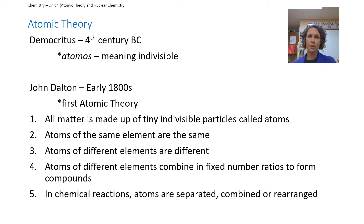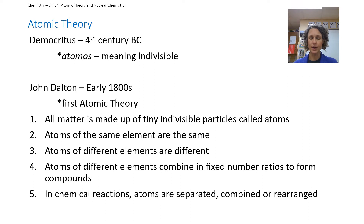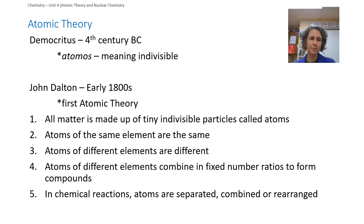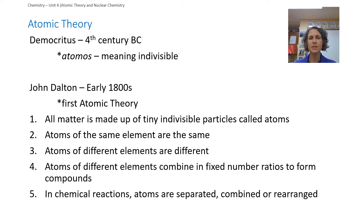Starting out, our first person is a Greek philosopher named Democritus. In the 4th century BC, he was the first person to suggest the idea that there are particles of matter that don't get any smaller. He named this particle an 'atomist,' meaning it's indivisible. Maybe he wasn't even really talking about a particle, but just the concept that eventually we'll get to something so small we can't divide it anymore.